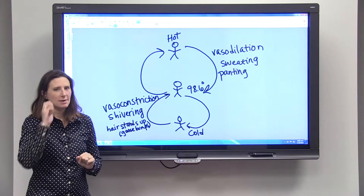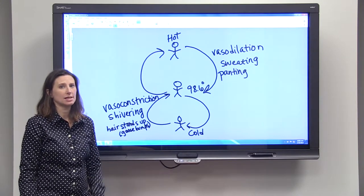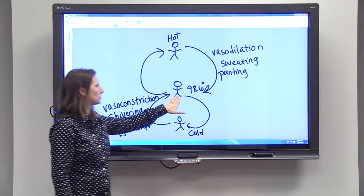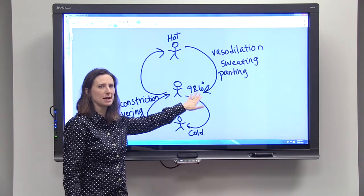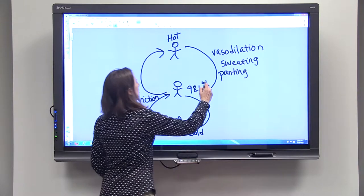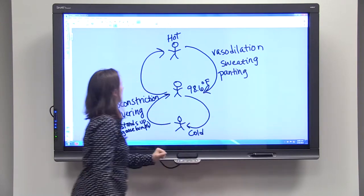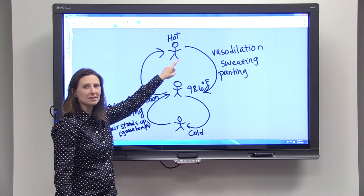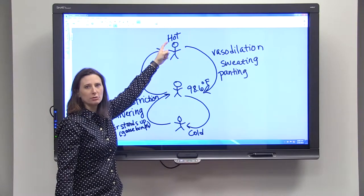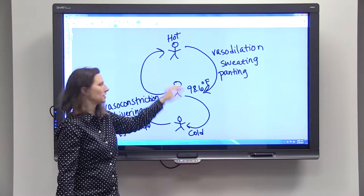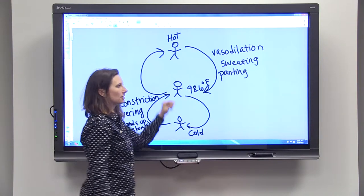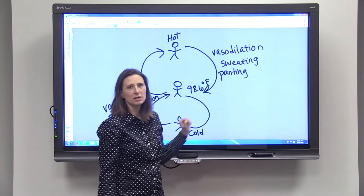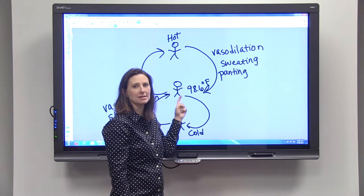Now we're going to talk about how an endotherm regulates its body temperature. This is an example of a person whose set body temperature is 98.6 degrees Fahrenheit. Let's say that person goes outside on a really hot day. Their temperature is going to reach higher than their set temperature. So then their thermoregulatory system is going to kick in and start doing some things to help cool them back to that set point.